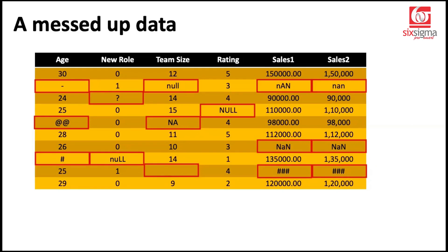Why we are talking about this example today is because some of these entries are recognized by Pandas as missing to begin with, while some other entries will have to be explicitly told to Pandas that these are not the intended values. For example, in the column called age, it does not make sense to have hyphens and at-the-rate symbols. So how do we tell Pandas in Python that these are to be converted to missing values? That's one learning. Second learning is how do we know which entries are already recognized as missing values? We're going to have a much closer look, and you'll be pretty much sorted by the end of this video.